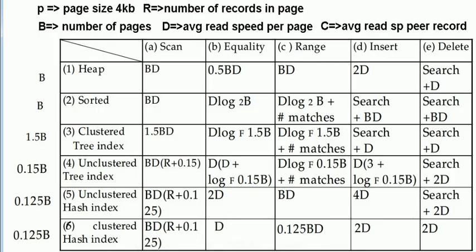Let's now talk about the heap, which is a table. A heap is just a table that has no clustered index — we don't have indices, we just have a table without any indices, without clustered indices. We have an unordered heap and we have a sorted heap, as we saw in the previous example.